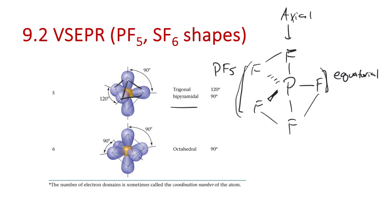We actually have two sets of bond angles in trigonal bipyramidal: 90 degree angles for equatorial-to-axial atoms, and 120 degrees for atoms on the equator. This is the geometry adopted by any molecule with five total domains. We also have to look at the shapes that emerge when some of those domains are non-bonding pairs.